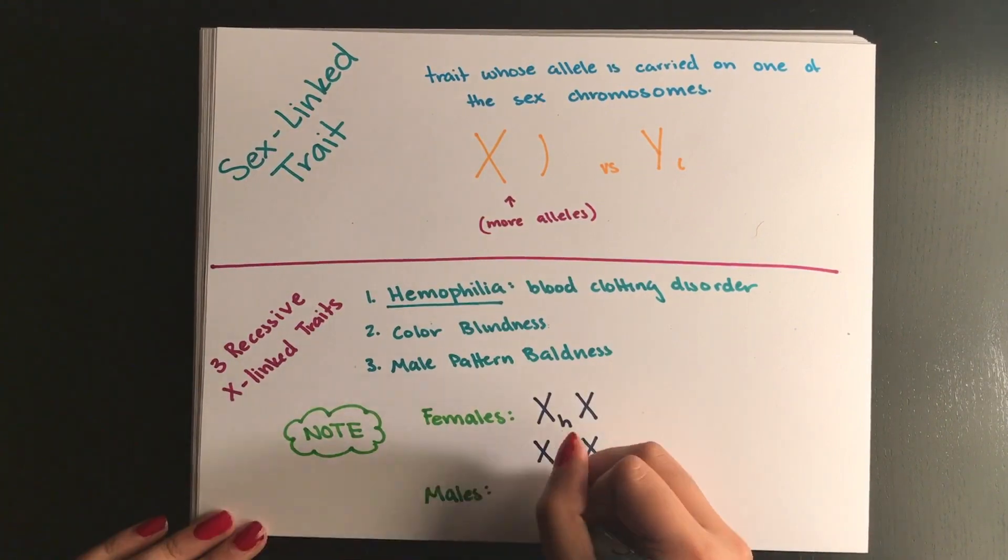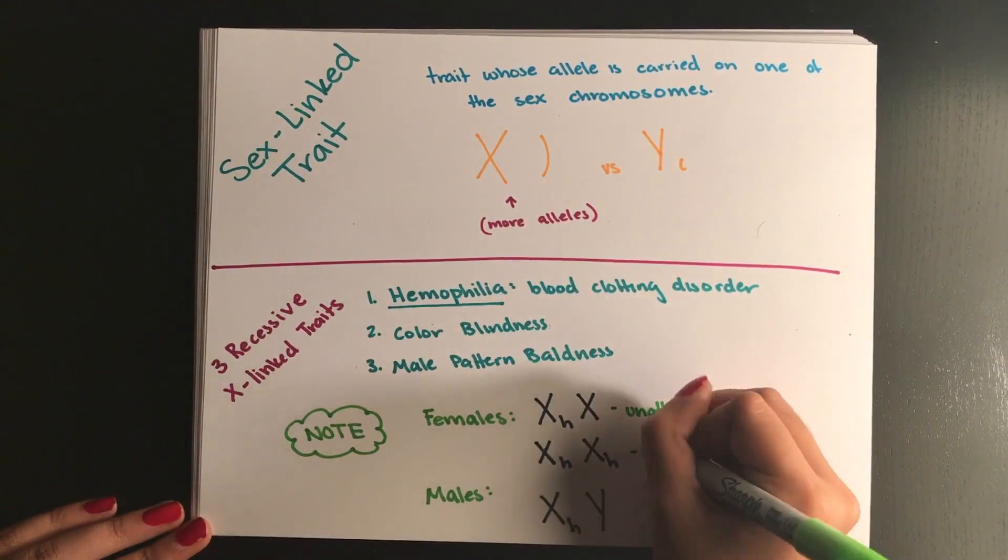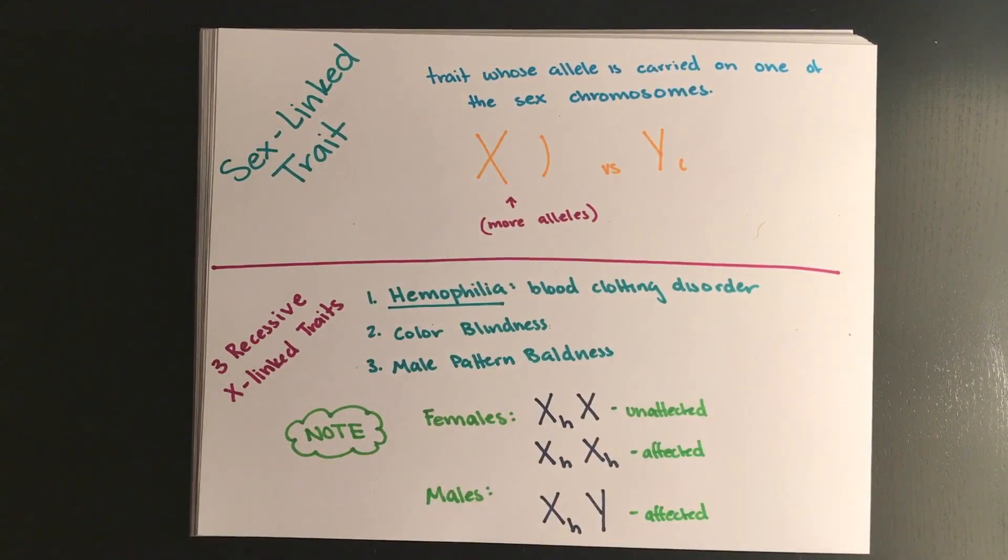For males, because they don't have another X chromosome, carrying a recessive X-linked trait for hemophilia will mean that the phenotype or the genes expressed are going to be hemophilia.